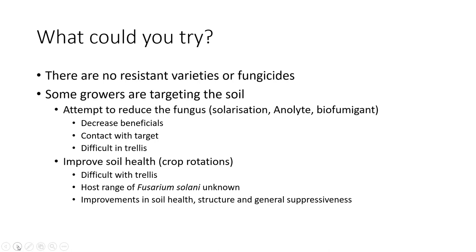There are no resistant varieties or fungicides suitable to use, so growers are looking at ways to either target the pathogen in the soil or improve soil health. I do not have any experience in passion fruit with these options, so I cannot provide specific advice, but if you are thinking of testing something, leave an untreated section to compare it to and take good notes. Solarisation may reduce the population of Fusarium selenae in the soil, but it will also decrease the beneficial microbes. Apparently some people have had success with analyte, though it would need to come into contact with the Fusarium, which may be difficult in an orchard setting, and it will also take up potentially beneficial microbes.